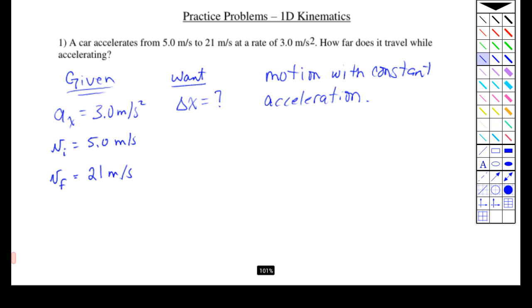Alright, now this is just a kinematics problem, and there are several equations we have for motion with constant acceleration. The one we're going to use is the following, that the final velocity squared is equal to the initial velocity squared, plus 2 times the acceleration, times the displacement.